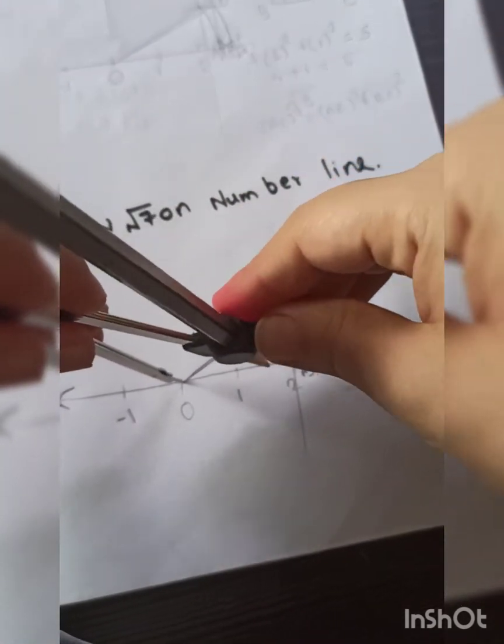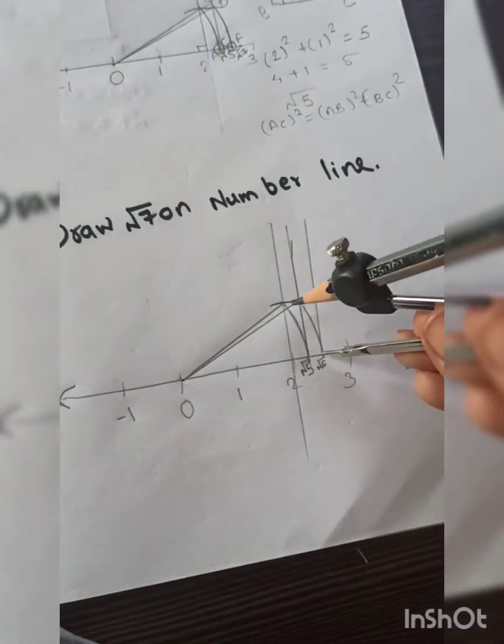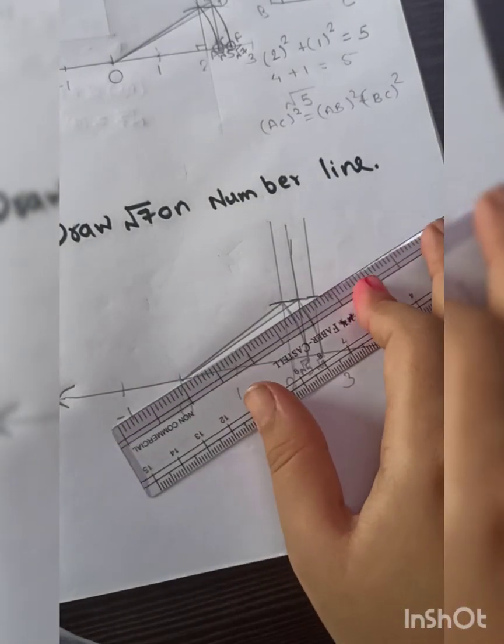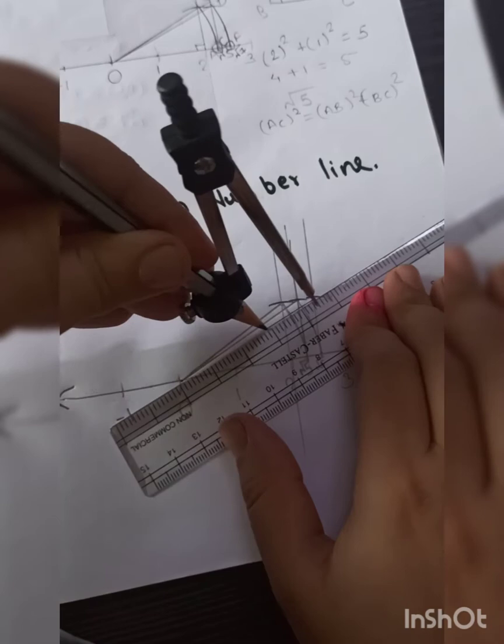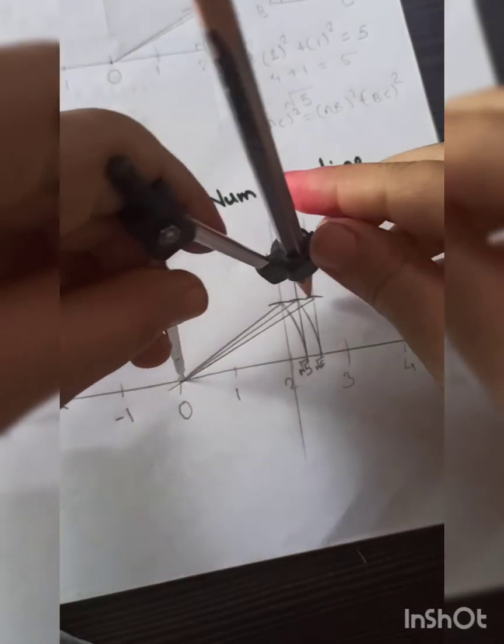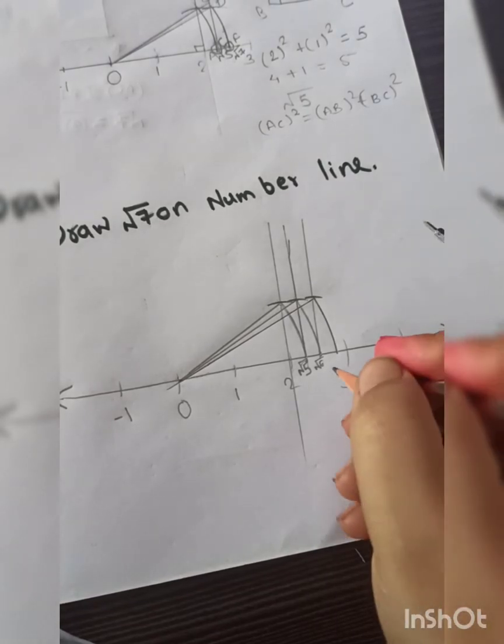0 to 1 again you will take. How much are you going to take? 0 to 1, and draw a unit. Same. Now join this with the center. So how many radius did we get? We got 3. Yes, now use this as your radius, newly constructed radius. Keep it on point 2 and draw an arc. Do you see it? Where are we getting root 7? This point on the number line shows root 7.